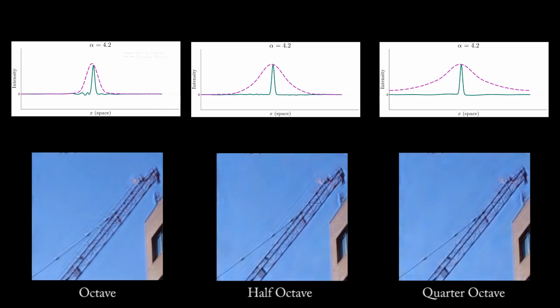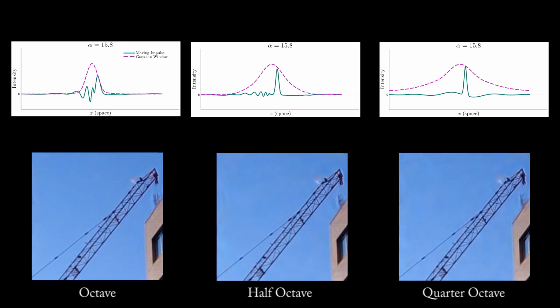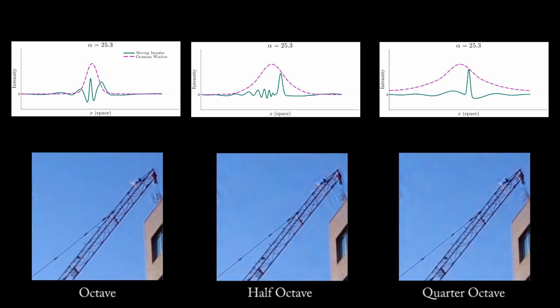The artifacts that we see in the synthetic example also occur in 2D natural sequences, and are reduced as we increase the number of filters. In this side-by-side comparison, there are fewer artifacts when the video is processed using the half- and quarter-octave pyramid representations.